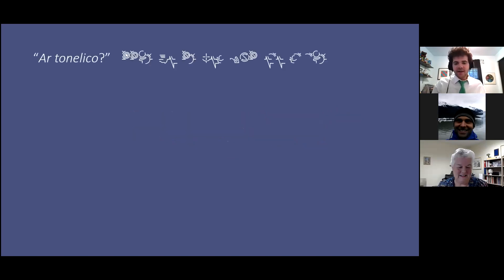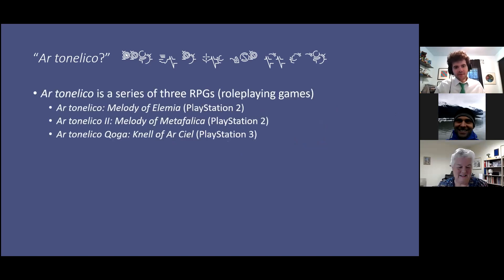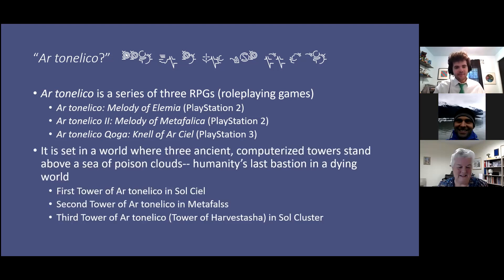Artenelico — what is that? It is a series of RPGs for the PlayStation family of consoles. There are three games in the series, which are right here. It takes place in the world of Ar Ciel, which is this world blanketed by a sea of poison clouds. In these poison clouds stand three computerized towers that are the last bastion of humanity. These towers — accepting the second tower — all function as something known as a song server, which we will discuss a bit more later.